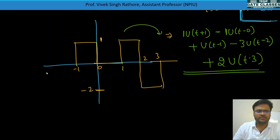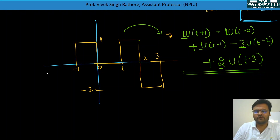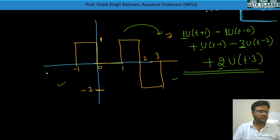Verify: +1 −1 +1 +2 −3 = 0, so the sum of amplitudes is 0, confirming this is a finite time-duration signal.